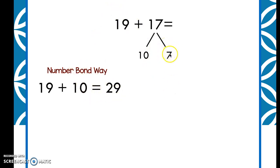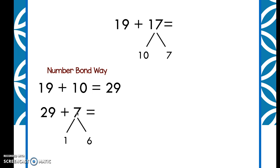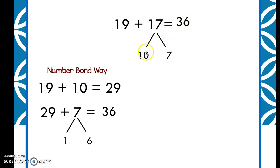Don't forget about the 7 — we have to add that too. Our new number is 29, plus 7 more. 29 is close to a 10 as well; we only need one more to get to 30. Let's take that one from the 7 and break apart 7 into 1 and 6. So 29 plus 1 is 30, and 30 plus 6 more is 36. All that work shows us that 19 plus 17 equals 36. That's the number bond way — we made a number bond here, and a number bond here.